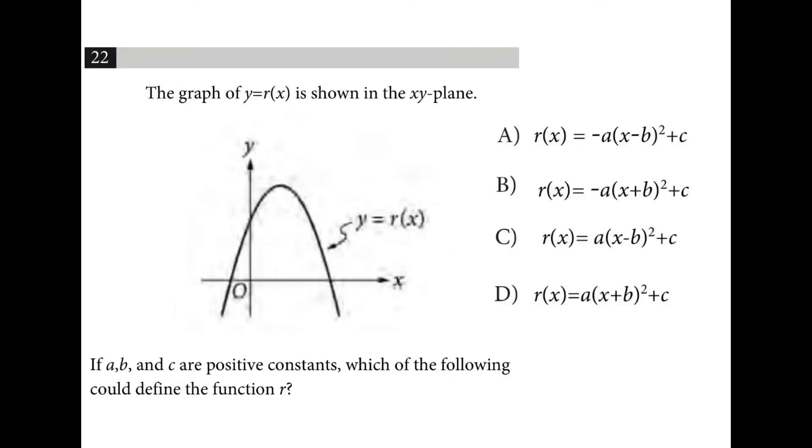So this is in vertex form, which means my vertex is b, c. And I see that it opens up downwards, so a is going to be negative. To put this vertex into an equation, it would read negative a times x minus b squared plus c, which is exactly what a says. So this is for vertex b, c.